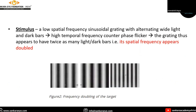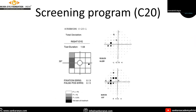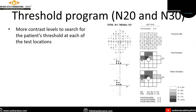The stimulus is a low spatial frequency sinusoidal grating with alternating light and dark parts which undergo high temporal frequency counter-phase flicker. The patient fixates on a black dot at the center of the screen and presses a button whenever the grating is seen. Based on the contrast required to perceive the grating, a threshold is estimated at the tested location. It offers a screening program C20 and threshold programs N20 and N30.